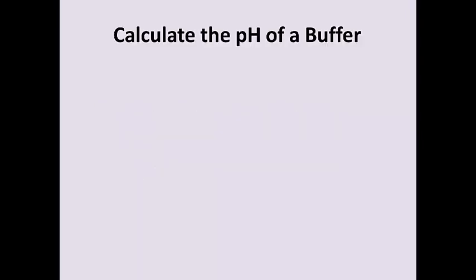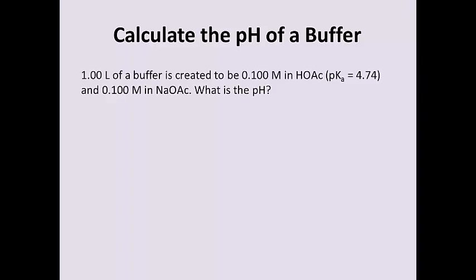Hi everyone. We're going to go through some buffer capacity problems today in order to show you that they actually are not as bad as you might think they can be. So the first example we'll go through is simply calculating the pH of a buffer solution. This buffer solution has been created to have a total volume of 1 liter. It is 0.1 molar in acetic acid, and we look up the pKa of acetic acid in a suitable table. And it's also 0.1 molar in sodium acetate. So we have a source of a weak acid and we have a source of its conjugate base. Calculating the pH from this information is actually fairly simple. We'll use the Henderson-Hasselbalch equation.